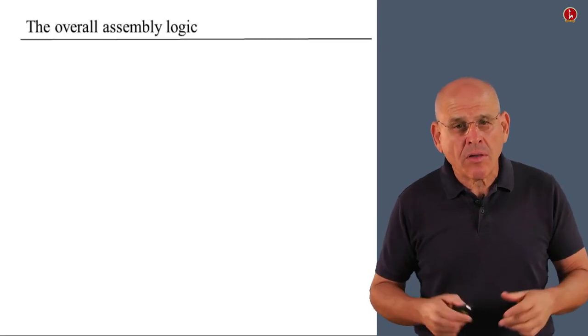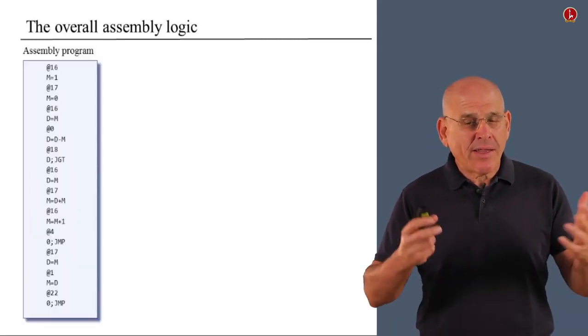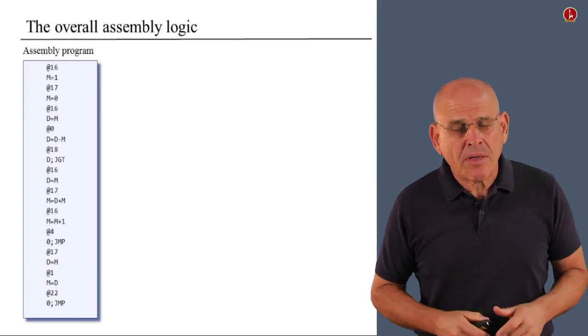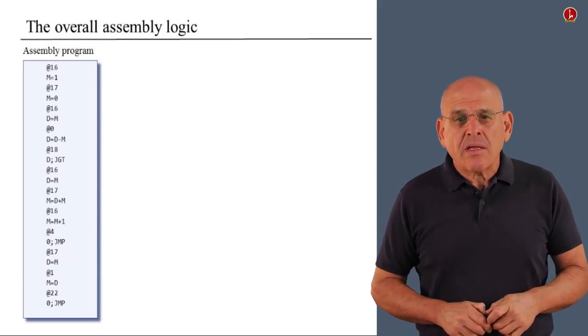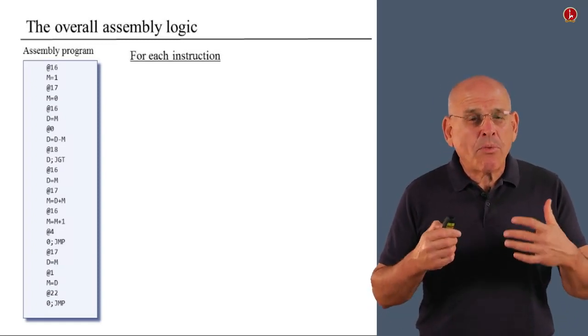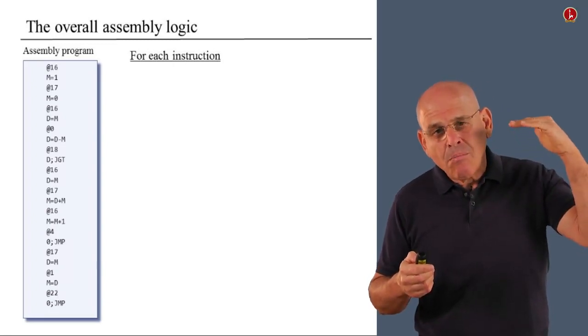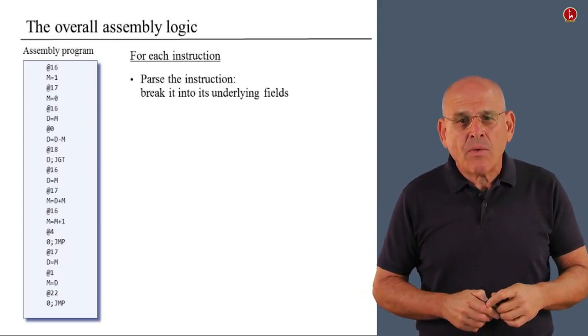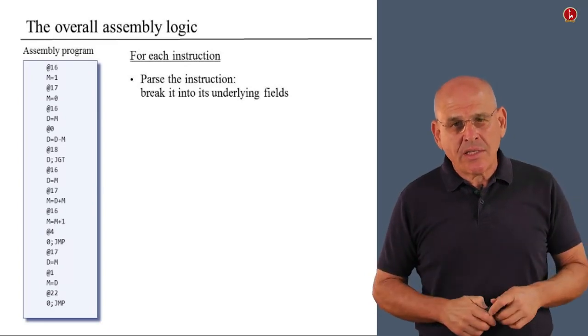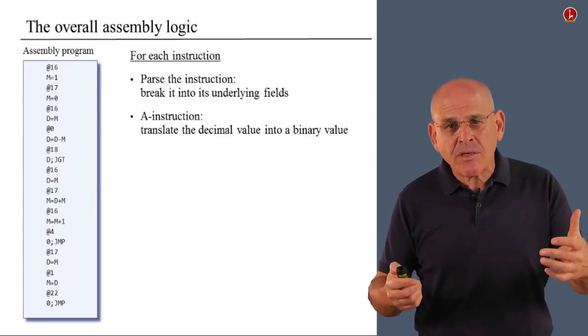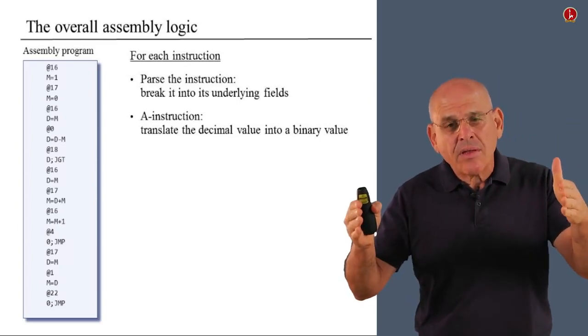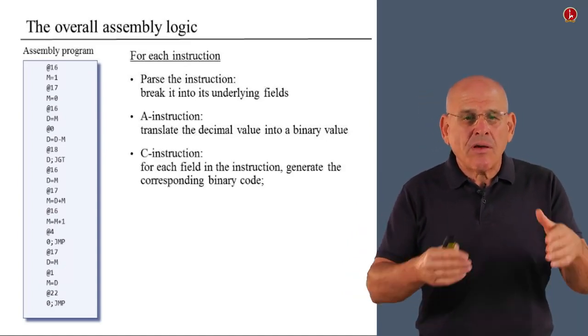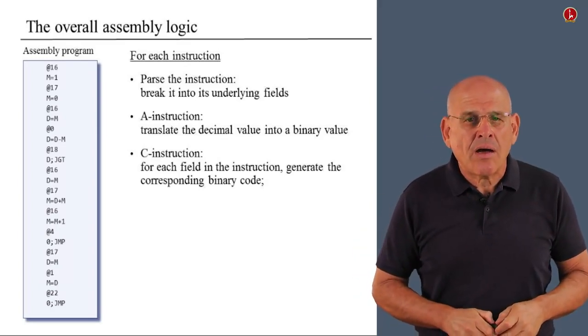So, with that in mind, here is the overall assembly logic. We are given a text file, and this text file contains all sorts of characters that hopefully represent a hack program written in symbolic hack code. So, how do we translate it into binary? Well, we process this file, and we begin marching through it. And for each instruction, or for each line in this file, we first of all parse the instruction. We break it into its underlying fields. So if we have an A instruction, we have the at sign and a value. We take this value, and we re-express it in binary code. If it's a C instruction, we split the instruction into its three fields